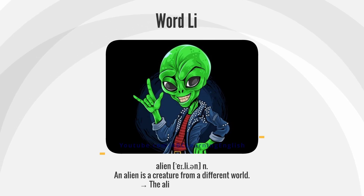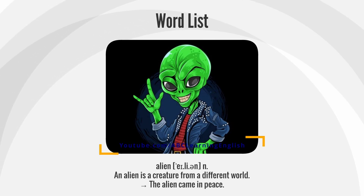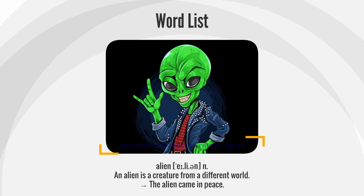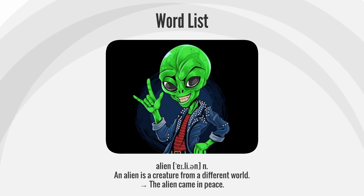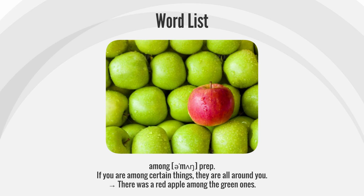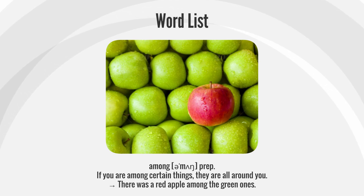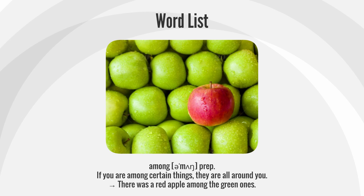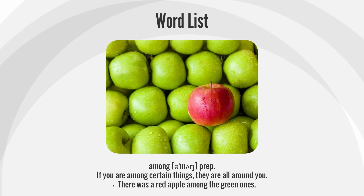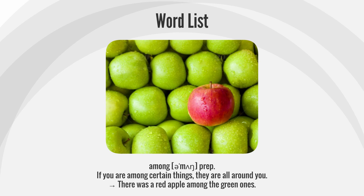Alien: An alien is a creature from a different world. The alien came in peace. Among: If you are among certain things, they are all around you. There was a red apple among the green ones.